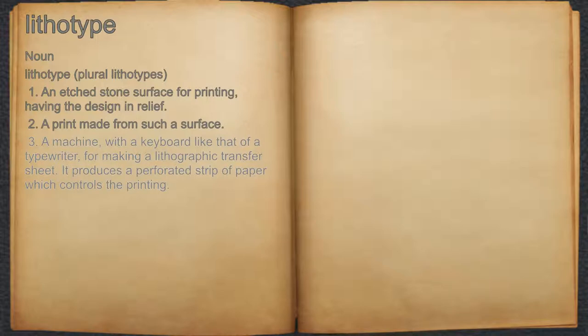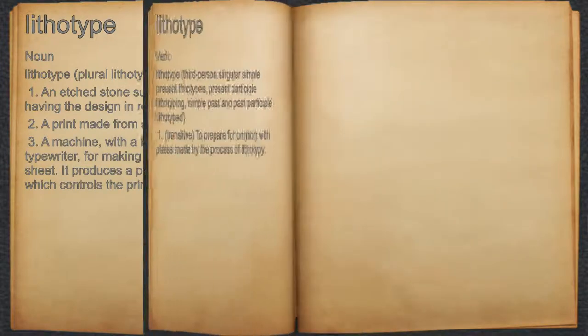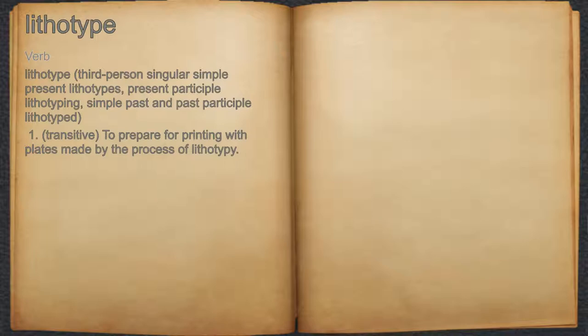3. A machine, with a keyboard like that of a typewriter, for making a lithographic transfer sheet. It produces a perforated strip of paper which controls the printing. Lithotype. Verb. 1. Transitive: To prepare for printing with plates made by the process of lithotype.